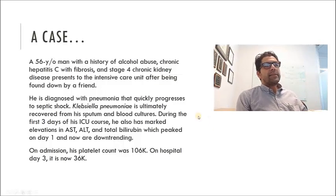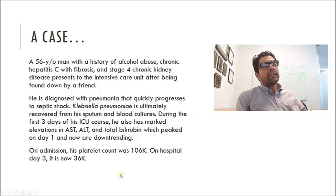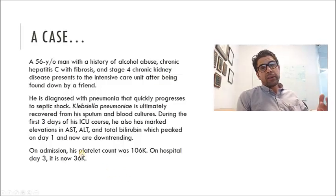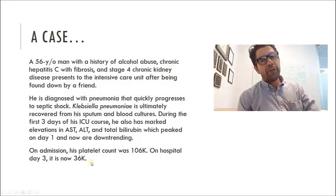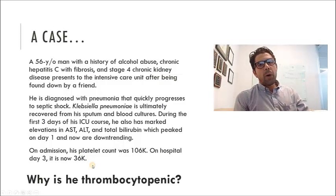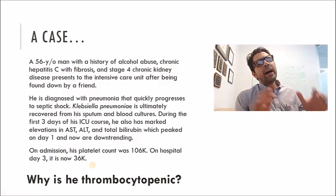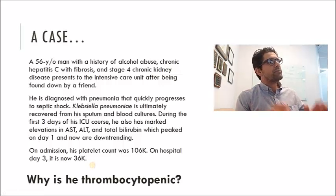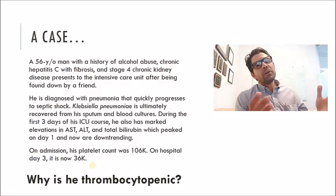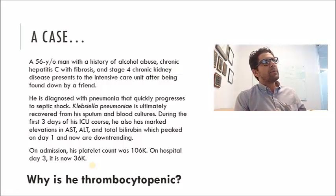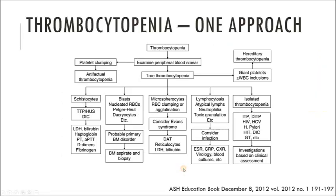During the first three days of his ICU course, he also has marked elevations in his AST, ALT, and total bilirubin, which peaked on day one and are now downtrending. On admission, his platelet count was already a little bit low at 106,000, and at hospital day three it is now 36,000. Why is he thrombocytopenic? There are so many reasons this patient could be thrombocytopenic, so I need an approach — a standardized way to work this up.